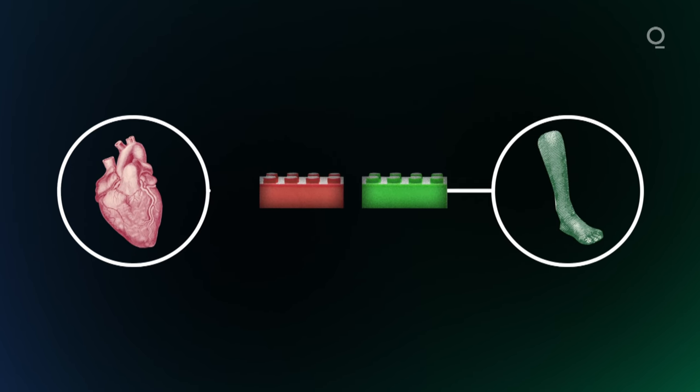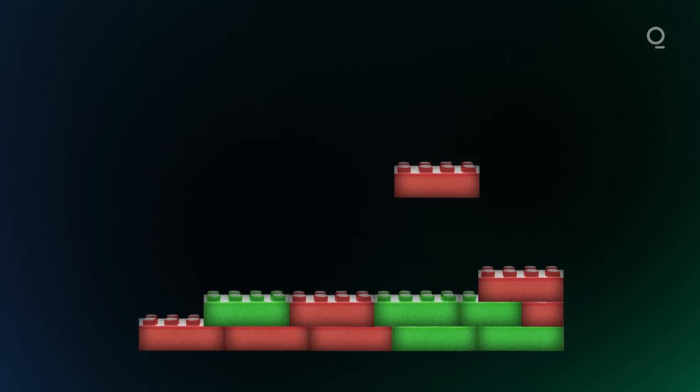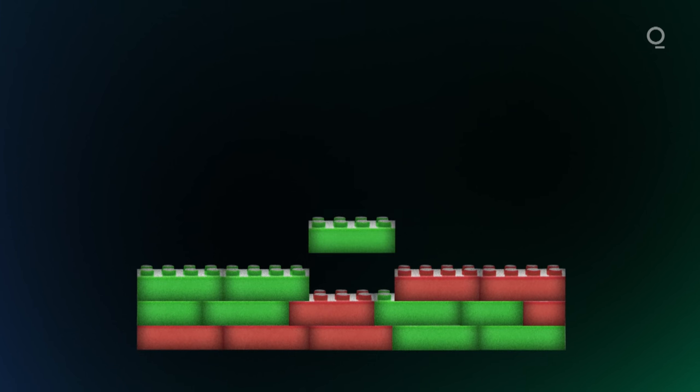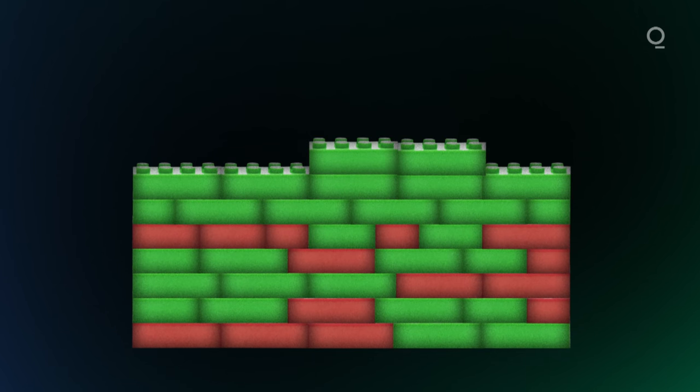So you could imagine a red Lego block is a heart cell and a green Lego block is a skin cell. And then really similar to building Legos, where you just sort of start connecting the pieces from the bottom up, we build our robots in the same way. We just build cell by cell until we get to a final shape and form.